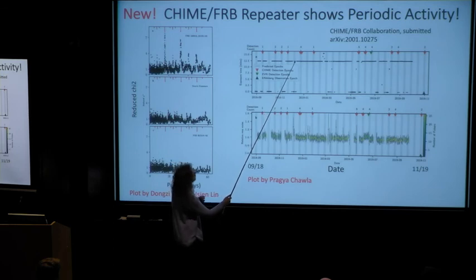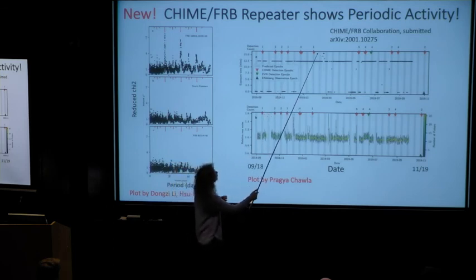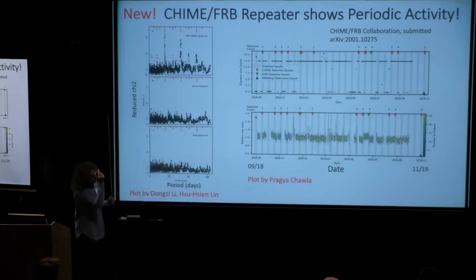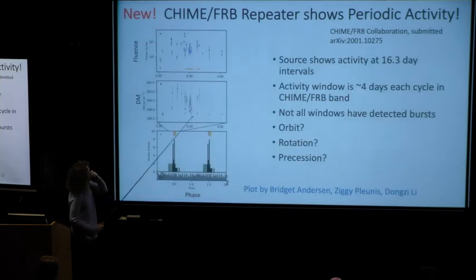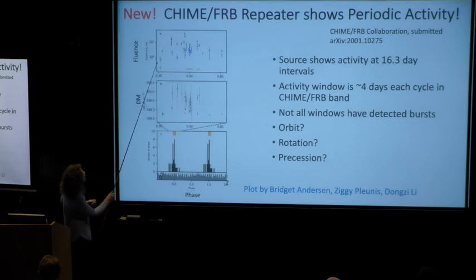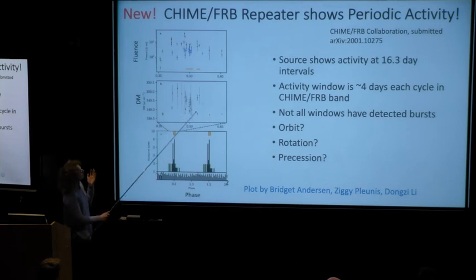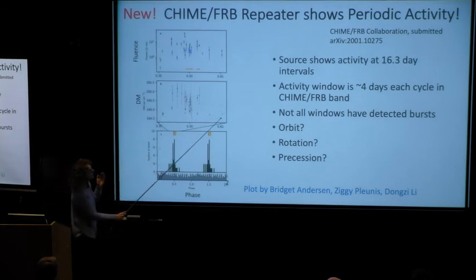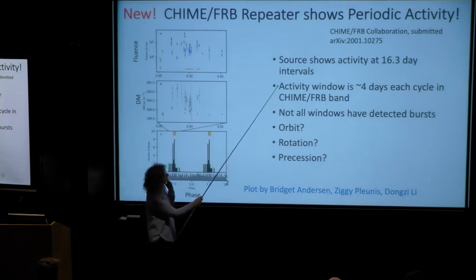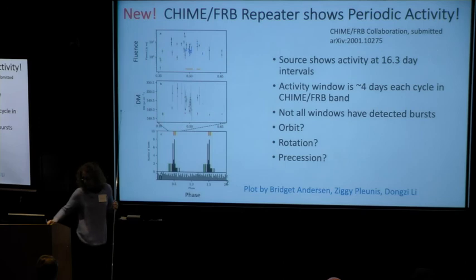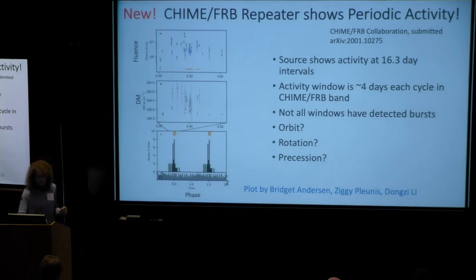A beautiful plot by Pragya shows all of our exposure in black — we have tons of exposure, but we only ever see the burster during a roughly four-day window within the 16-day cycle. Some cycles have excellent exposure but no bursts. The fluence shows no obvious correlation with phase in the 16-day cycle. The dispersion measure, particularly from baseband data, appears very constant. What causes this periodicity? We'll probably discuss it, but we don't know, and I hope you'll tell us.